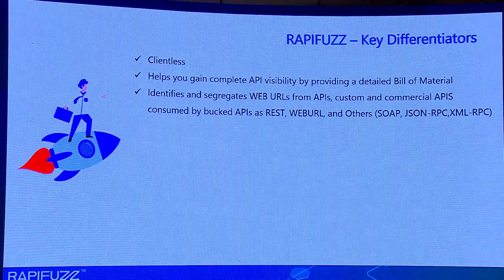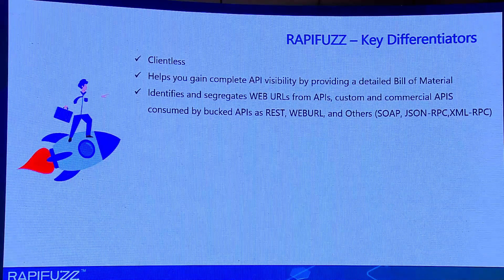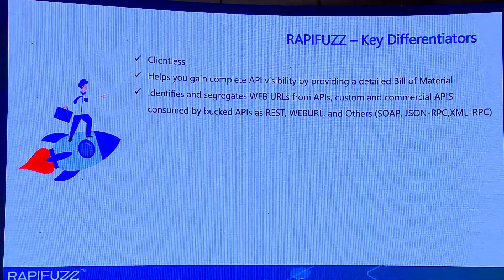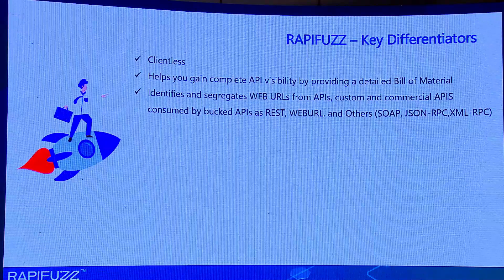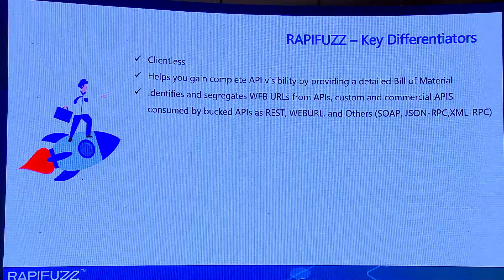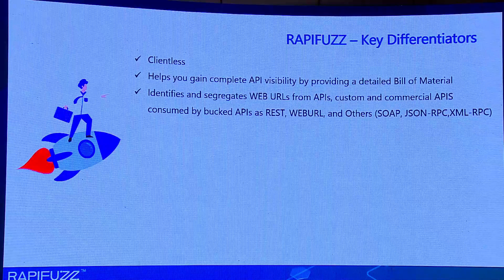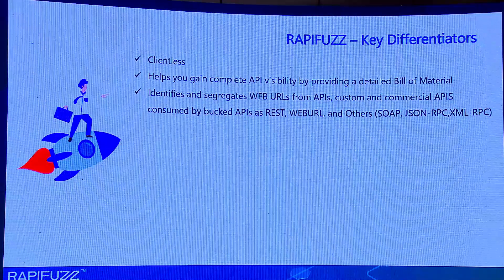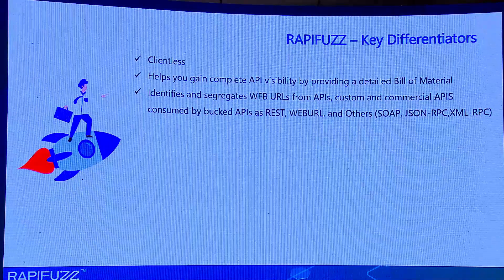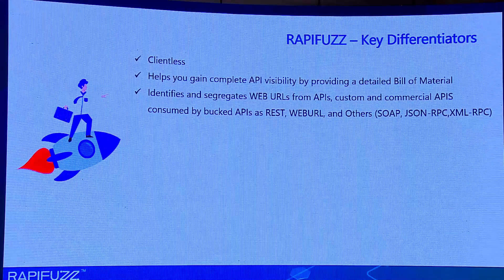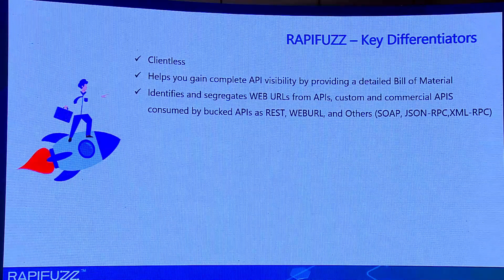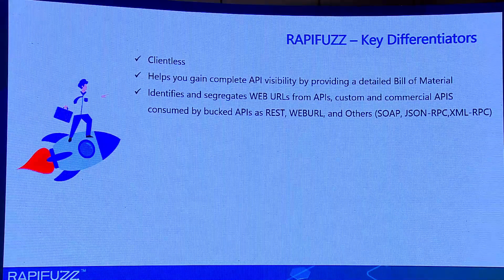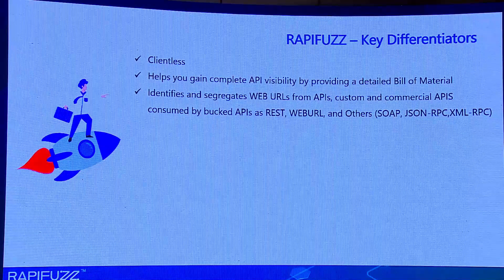We also segregate APIs as REST, SOAP, and others — including JSON-RPC, XML-RPC, and portions of GraphQL. If you look at the total landscape, 95-plus percent of API consumption today is on REST; the remaining five percent is distributed across the others. One of our US customers has asked us to integrate GraphQL. It was planned for Q1 2023, but they're very insistent on closing the deal in December, so our team is integrating GraphQL into the product now.